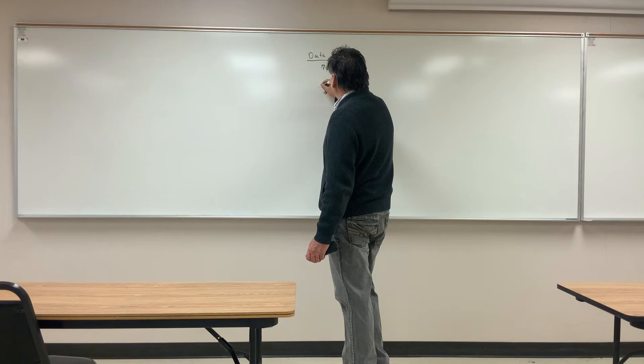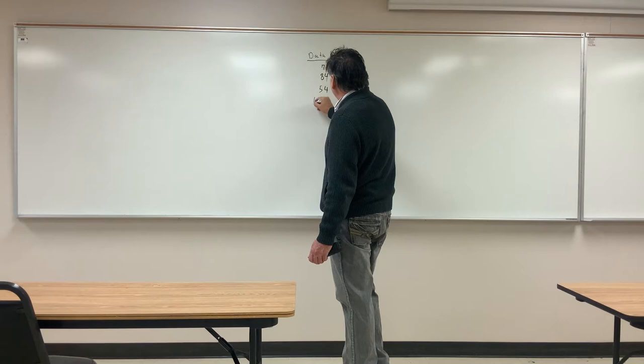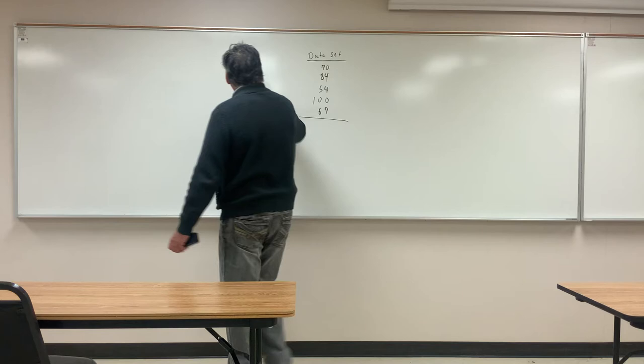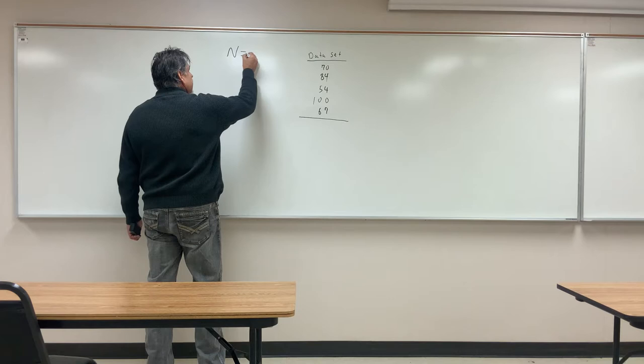So this data set here — let's say that someone made a 70, someone made an 84, someone made a 54, then we had someone who made 100, and then 67. Those are going to be our scores. When I say find n, n is going to be the symbol for how many data points you have. So I have one, two, three, four, and five — so n is going to equal five.